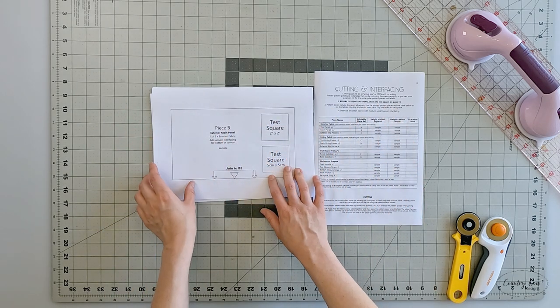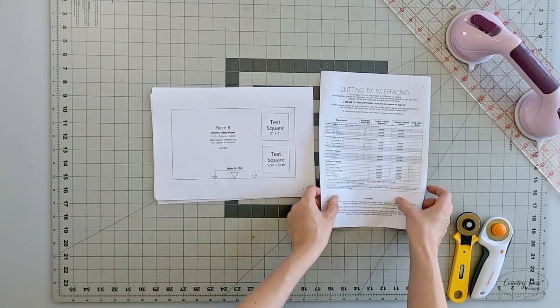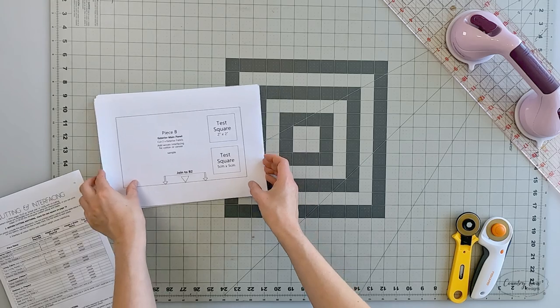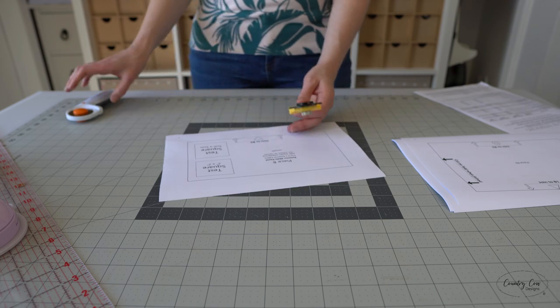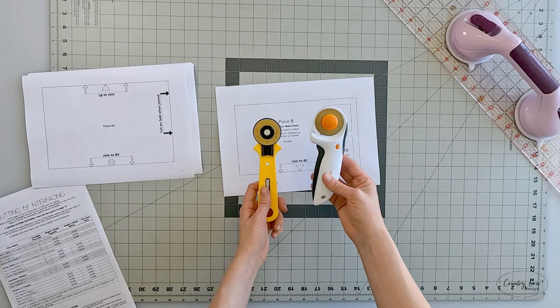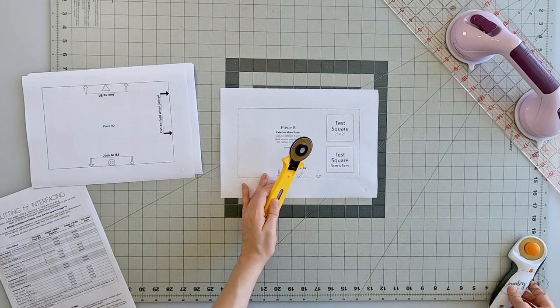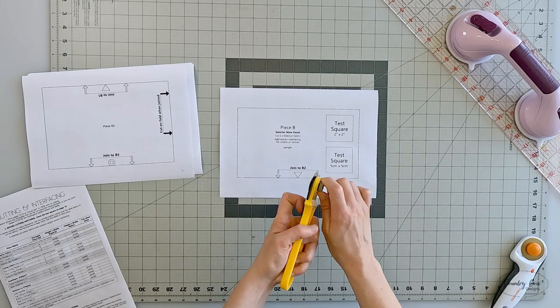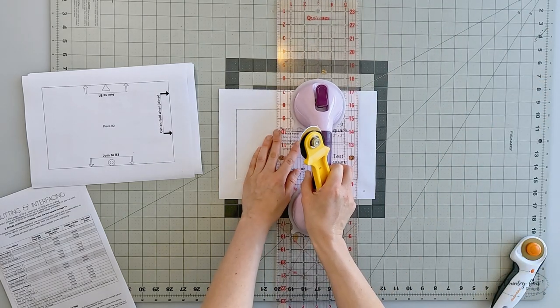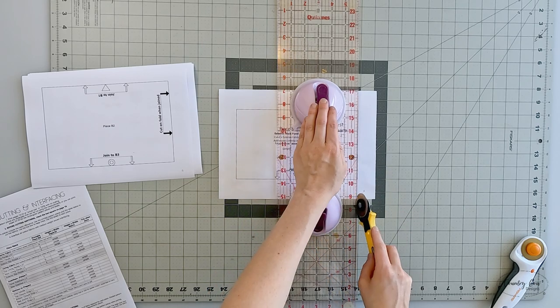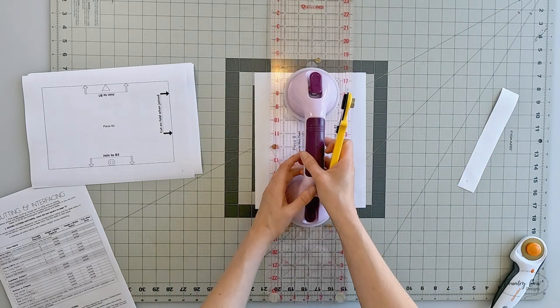Once you've checked your test squares and you're happy with that, you can cut out your pattern pieces. I recommend using a rotary cutter but have a separate one that you use just for paper patterns and one for your fabrics, because you don't want to mix these or else you're going to blunt them. You're just cutting along the solid exterior lines.